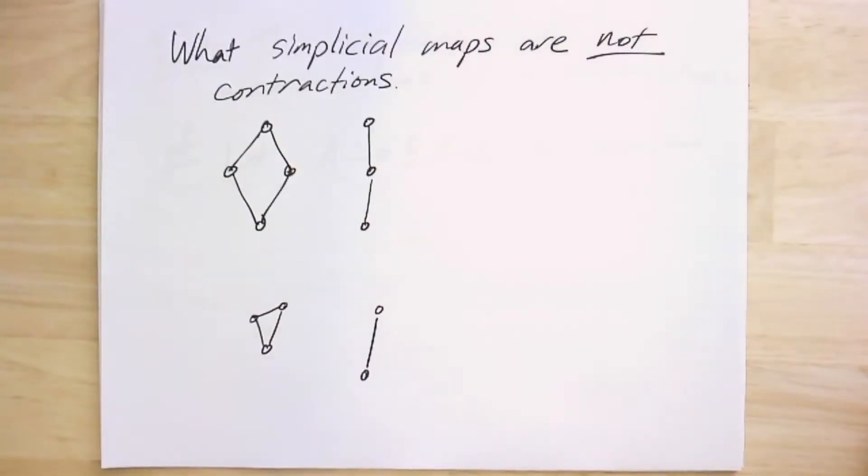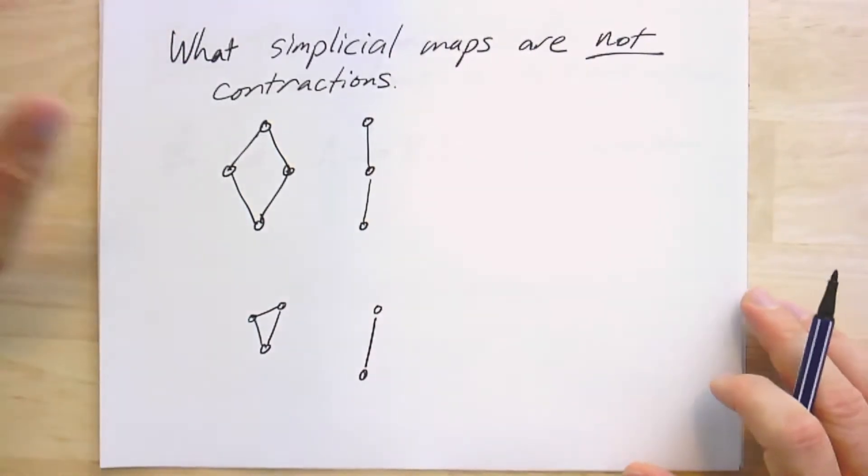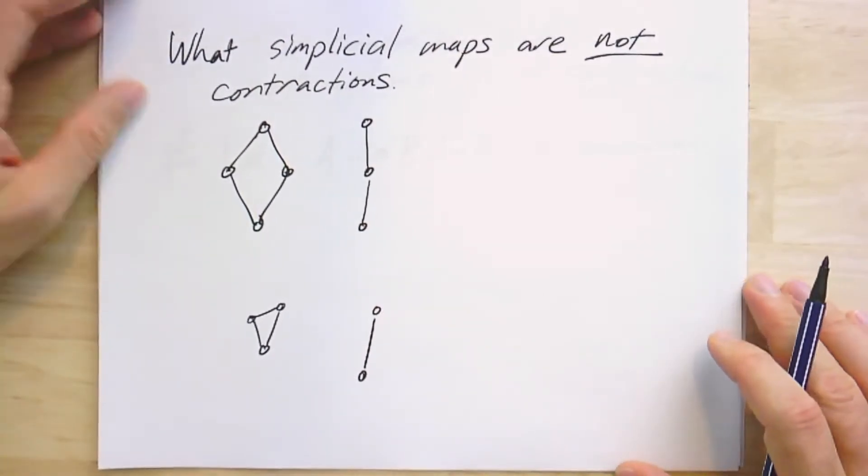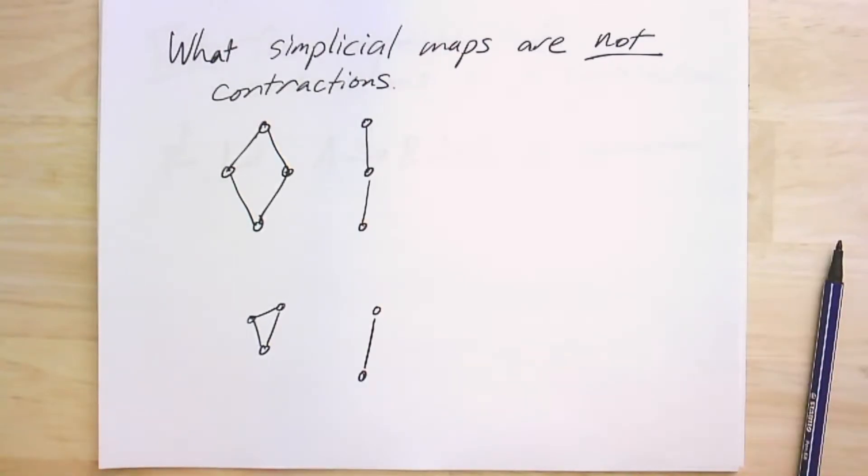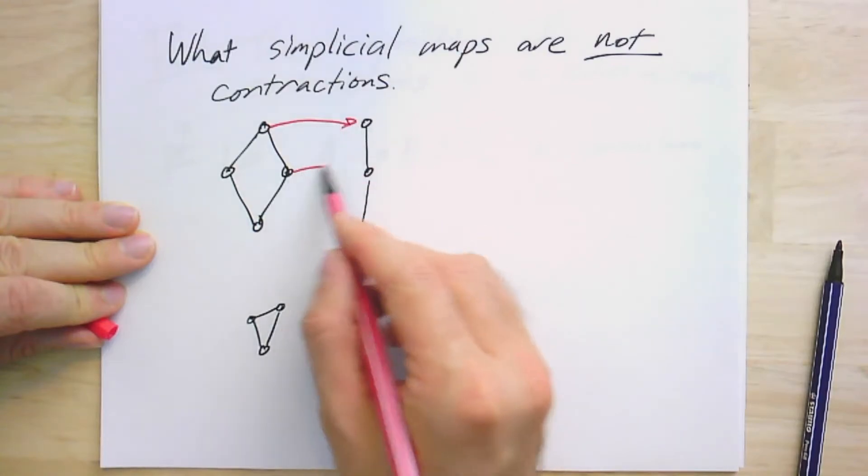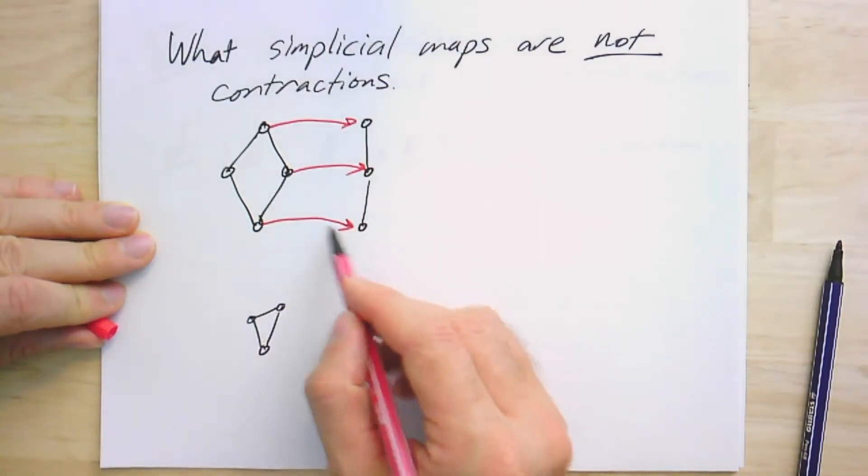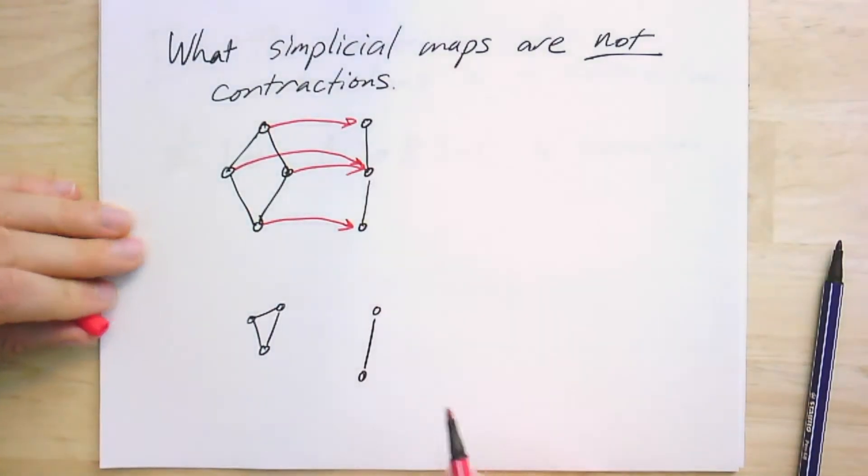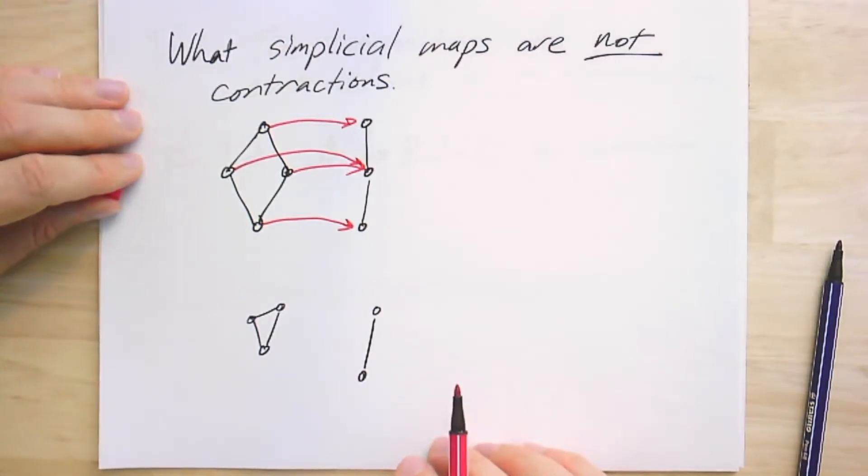To distinguish this from other simplicial maps, we just point out that not all simplicial maps are contractions. For example, if I took this graph right here on the left and I map the vertices kind of across like this. And let's map this one also to here. You'll notice that this is a simplicial map, but it's not a contraction.